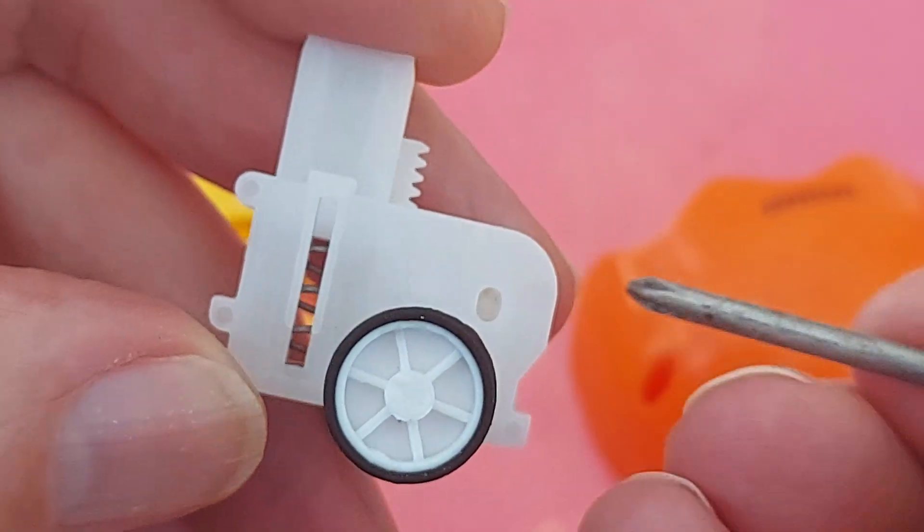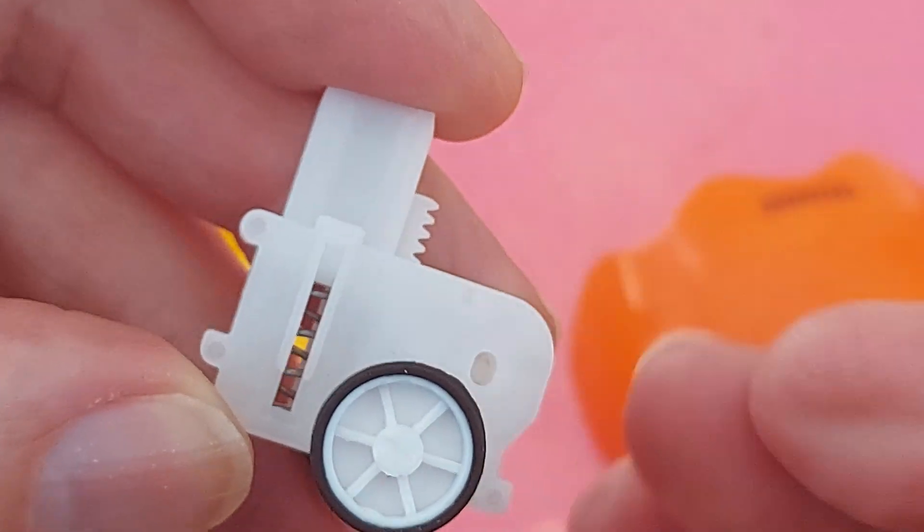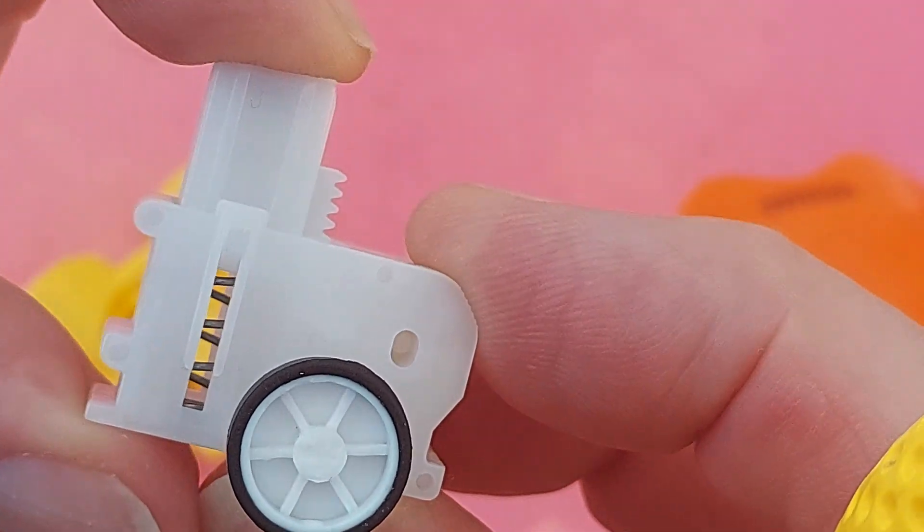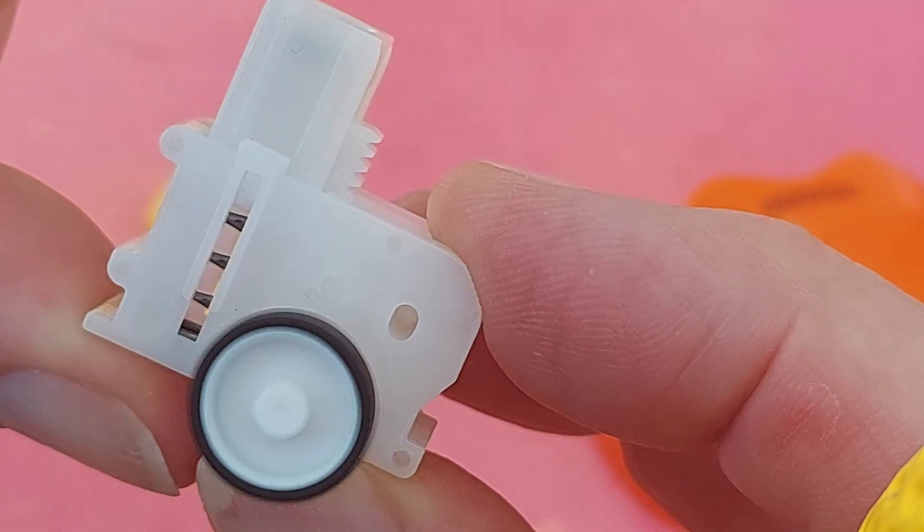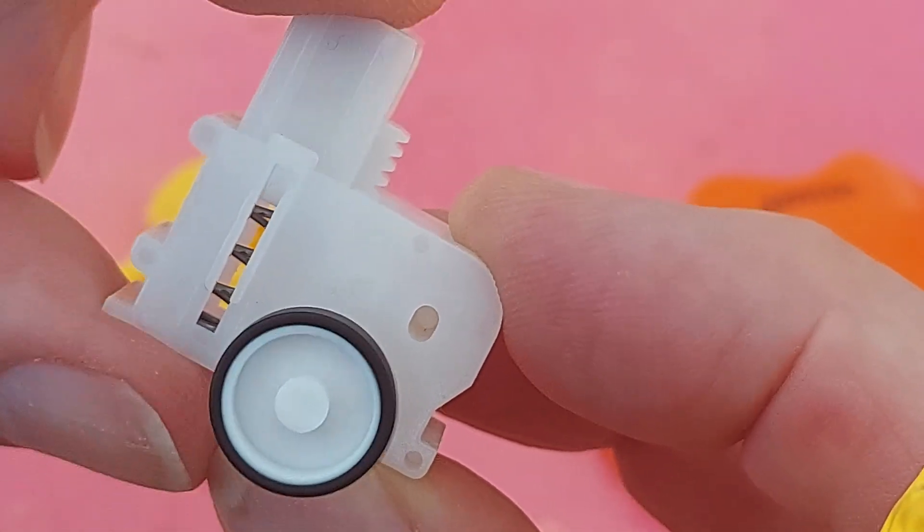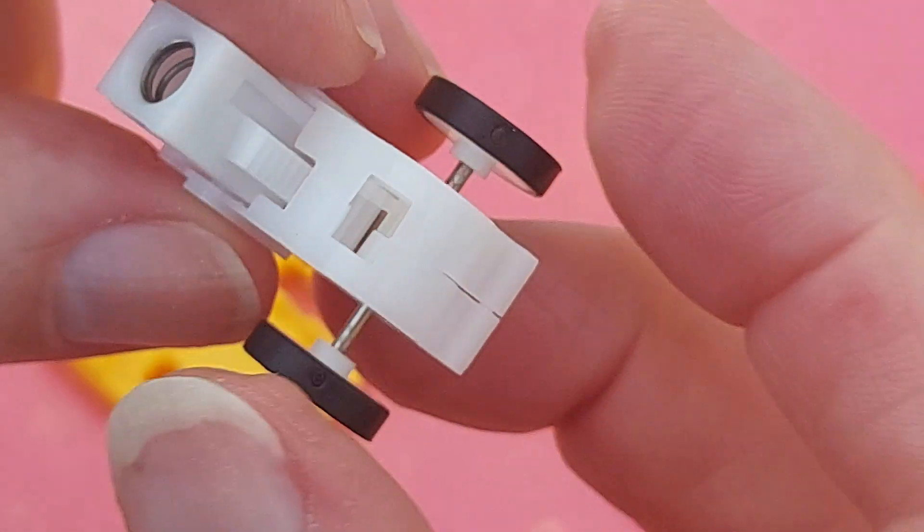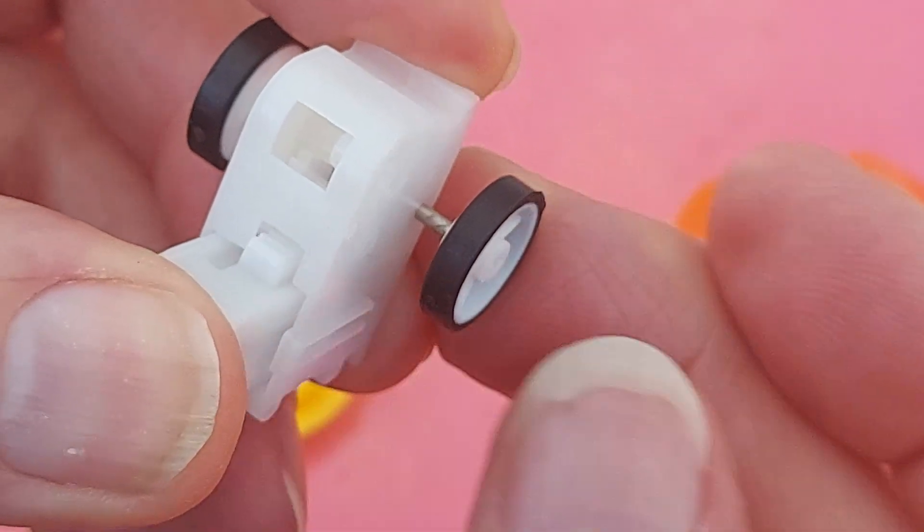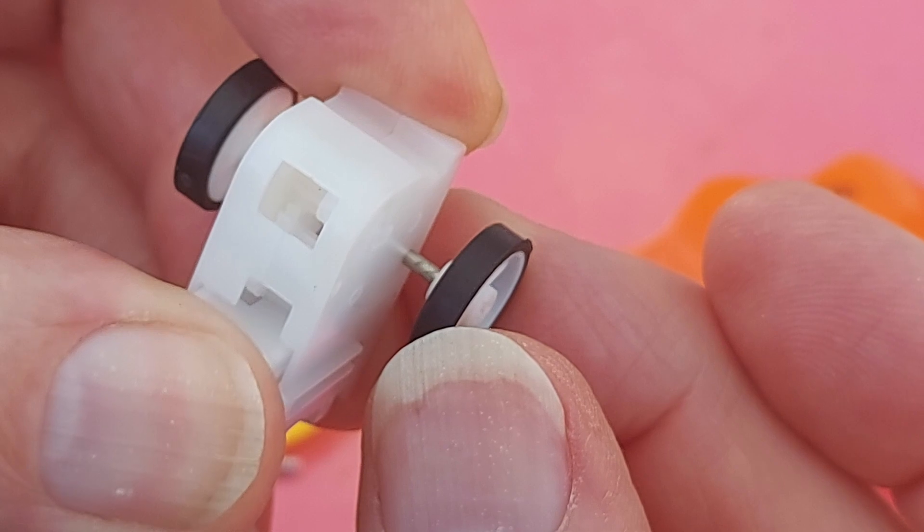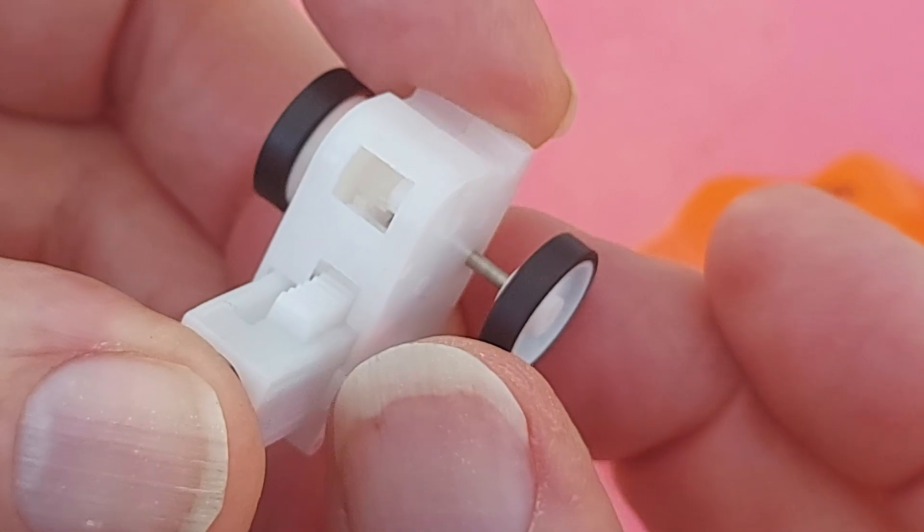So yeah, we can see the rack. We can see the spring inside. So we push that down, and as we release it, it's spinning the wheel. So there must be a gear there that disengages it as you push it down. And only engages when you release.